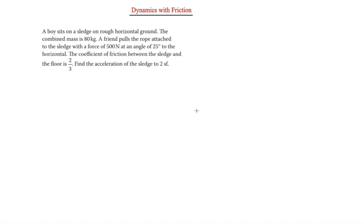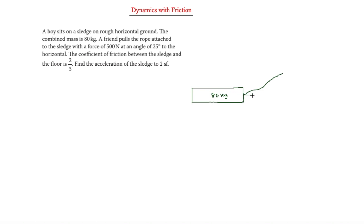We have horizontal ground and we're going to treat the boy and sledge as a system — one combined object of 80 kg. A friend is pulling the rope attached at an angle of 25 degrees to the horizontal.